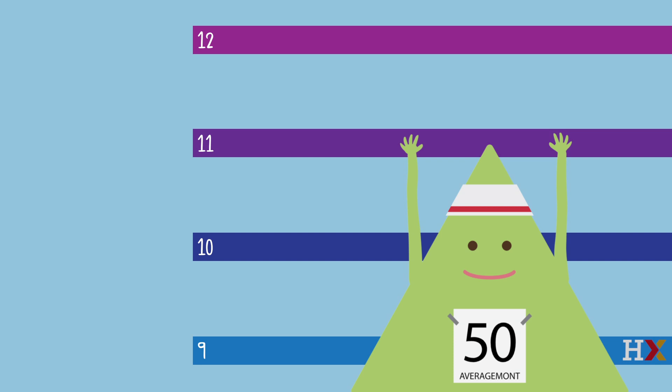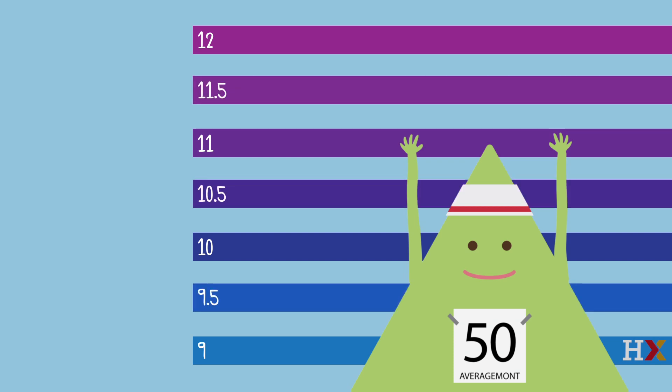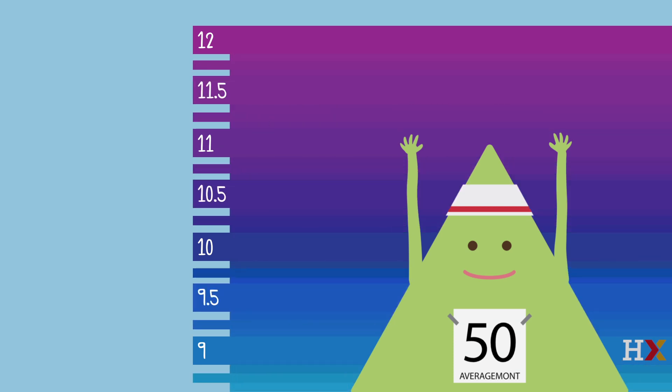If we imagine more and more bars being filled in, the discrete random variable measuring which bar was reached becomes a better and better approximation to the continuous random variable measuring the height that John reached.